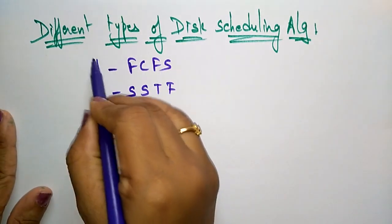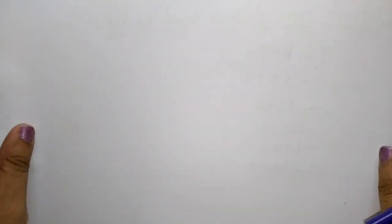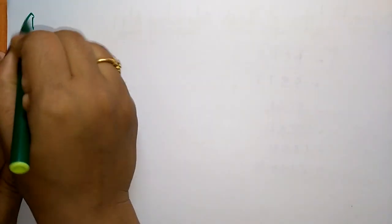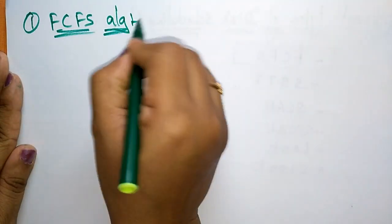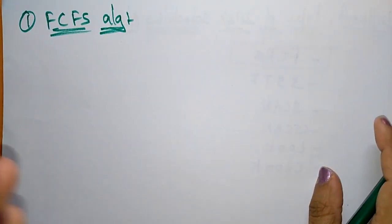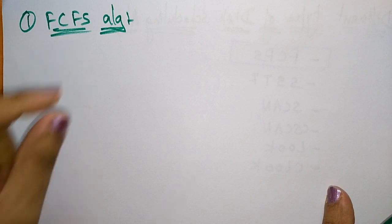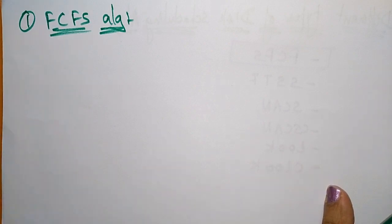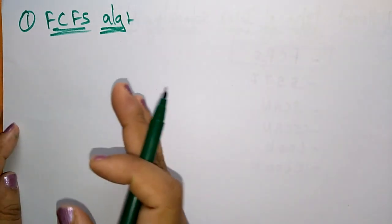The first technique is the First Come First Serve disk scheduling algorithm. FCFS is the simplest of all disk scheduling algorithms. In FCFS, requests are addressed in the order they arrive in the disk queue — whatever order they are received, they are served in that same order.